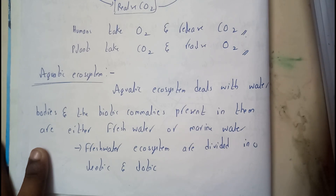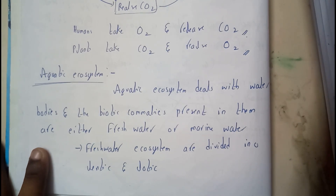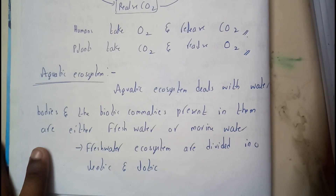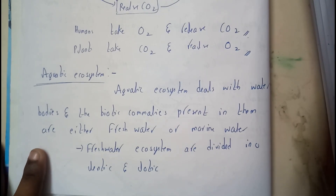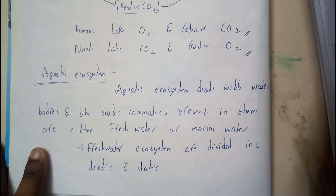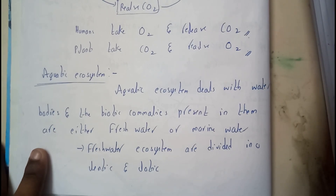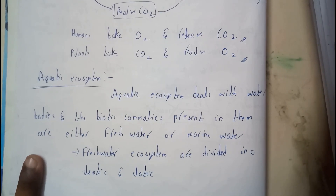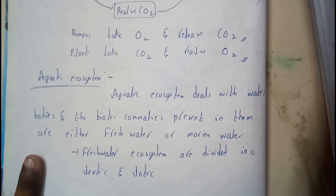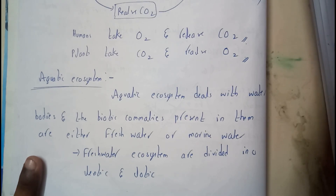We are back with our next tutorial. In this tutorial, let's see all about aquatic ecosystem. As I have told you previously in ecosystem classification, aquatic ecosystem deals with water bodies. The biotic components present in them are either freshwater or marine water.